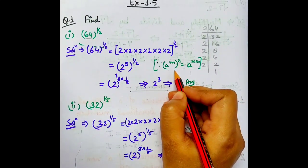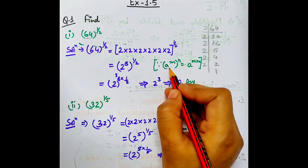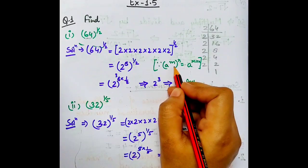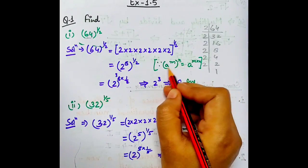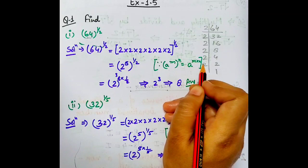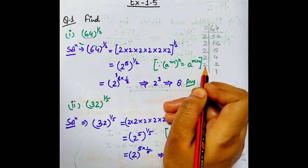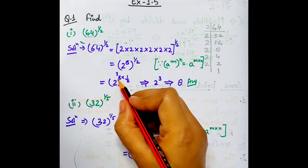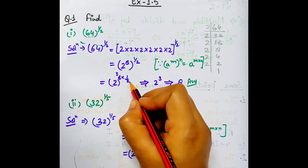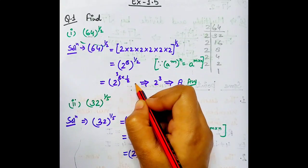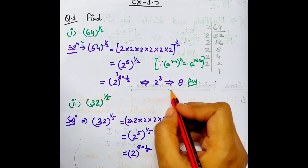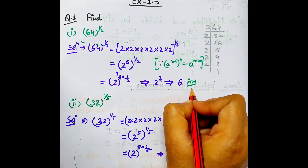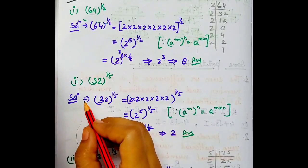Jo law yahan pe lag raha hai: power of power. Jab kisi number ki power dhi rahi ho aur us pe power lagi rahi ho, to kya hota hai? Dono powers ka multiplication ho jata hai. To hume 2 whole to the power 6 into 1 by 2 milega. Isko solve karne ke baad humara answer 2 to the power 3, which is equal to 8.